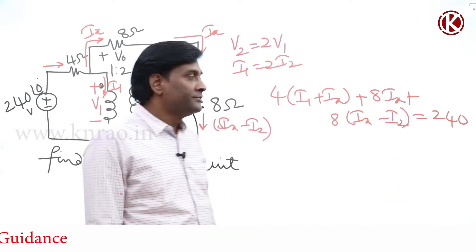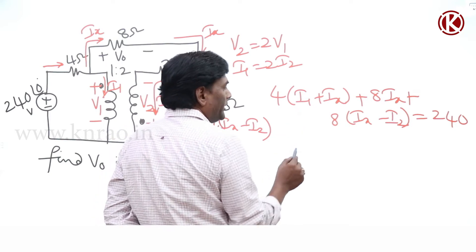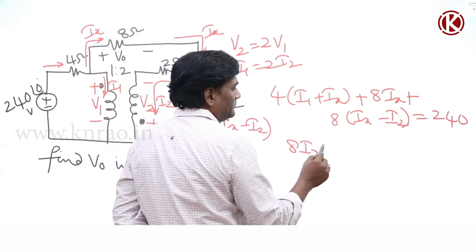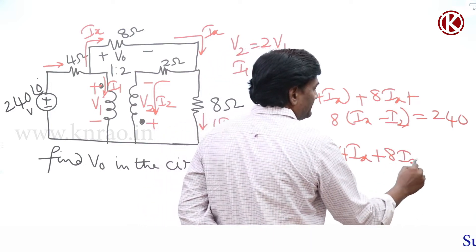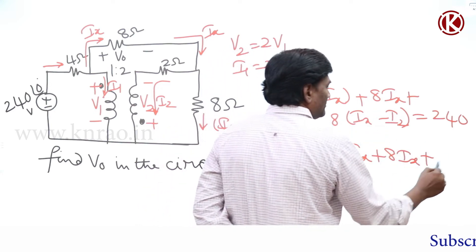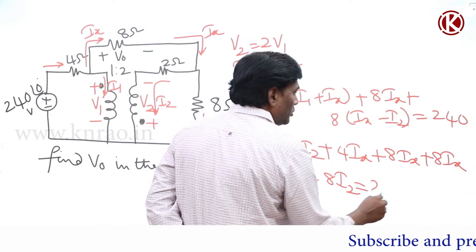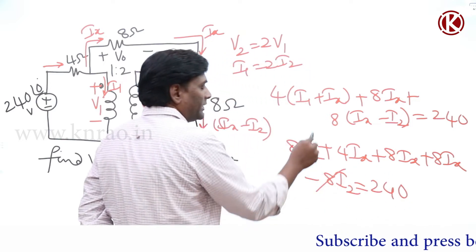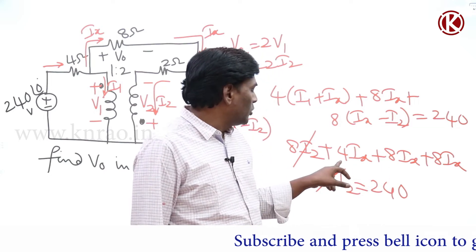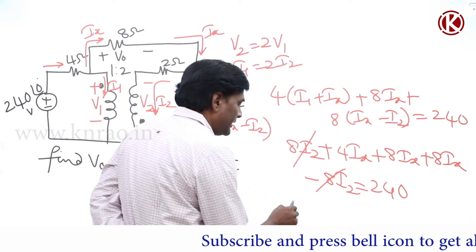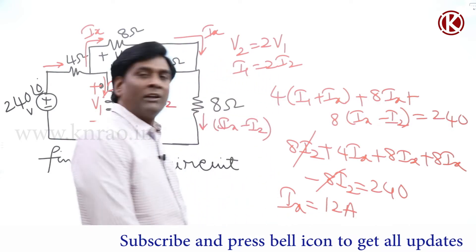Now substituting I1 = 2I2: 4 into 2I2 gives 8I2, plus 4Ix, plus 8Ix minus 8I2 equal to 240. The 8I2 terms cancel. So we get 8 plus 4 equals 12, then 12 plus 8 equals... wait — 8Ix plus 4Ix is 12Ix, plus 8Ix from the second term: that gives 16 plus 4 equals 20. So 20Ix equals 240, meaning Ix equals 240 divided by 20, which is 12 amperes.